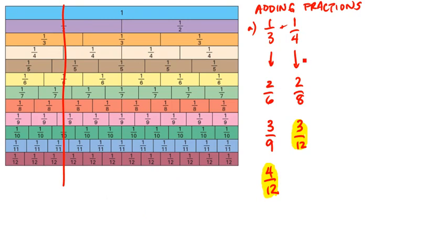So we know that one-third is the same as four-twelfths, and one-quarter is the same as three-twelfths. So now if we add those two equivalent fractions together, four-twelfths plus my three-twelfths equal seven-twelfths.